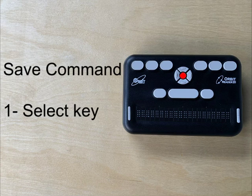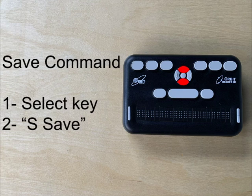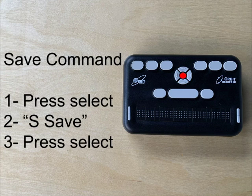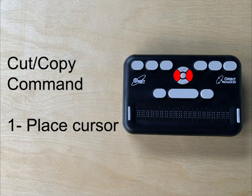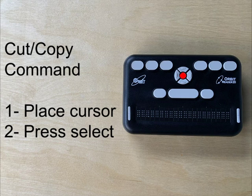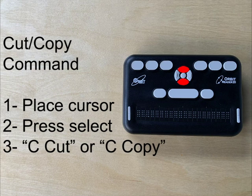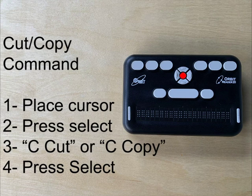Once you are ready to save the file, press the select key. Navigate to S save and press select. To cut or copy, place the cursor to the position where you would like to perform the operation. Press select. Navigate to C cut or C copy and press select again.